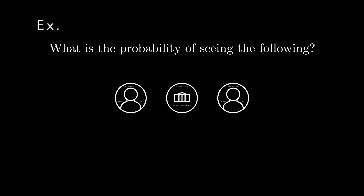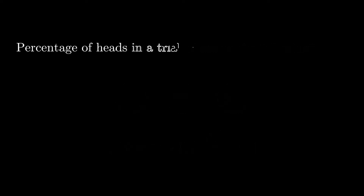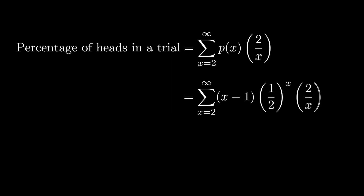As an example, suppose we flipped exactly two heads and one tail — it doesn't matter the order, what matters is we got two heads in three flips. To determine the probability of seeing two heads in three flips, we put the number three in for x into our distribution. Thus, the probability of seeing two heads in three flips is exactly 0.25. Now, to find the expected percentage of heads in each trial, we look at an infinite sum — weighting each percentage of heads by the probability that percentage shows up. Using the negative binomial distribution for the probabilities, it ends up being 0.614.